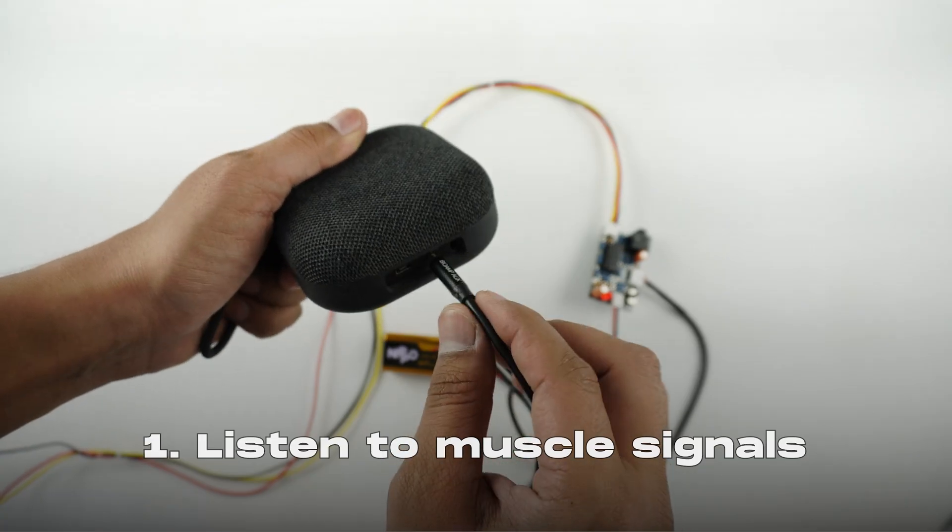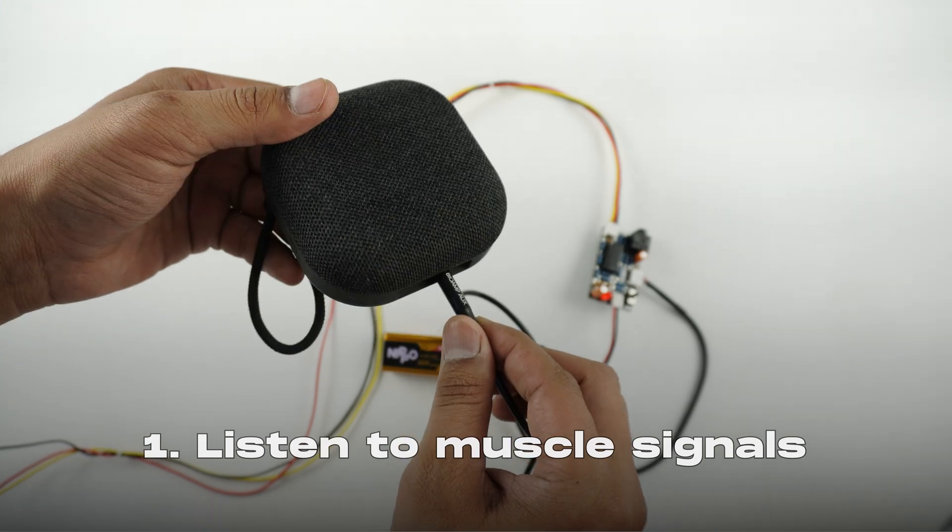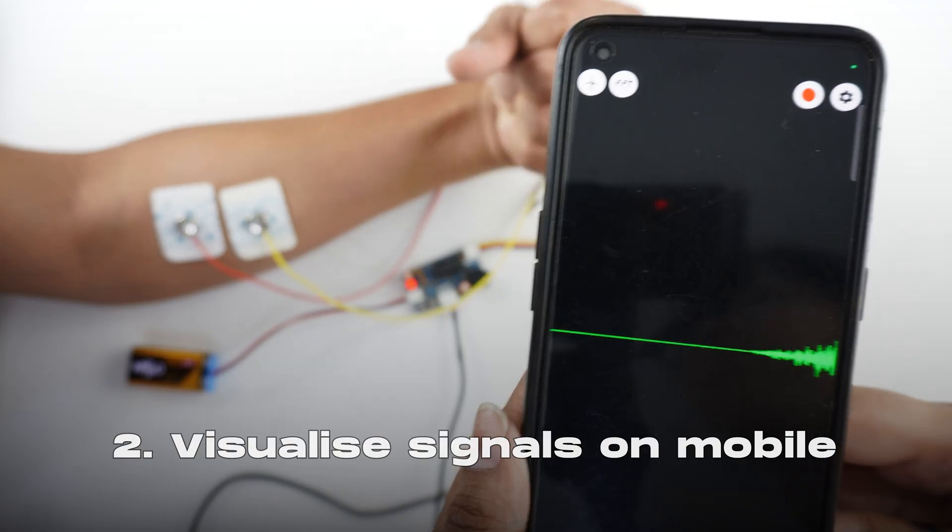There are various possibilities to use BioAmp version 1.5. Let's divide this video into three segments. First, we will be using it to listen to the muscle signals. Then we will connect it to a mobile phone, and at the last we'll be connecting it to a laptop to visualize the muscle signal.